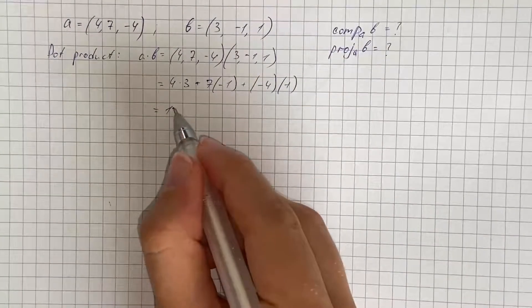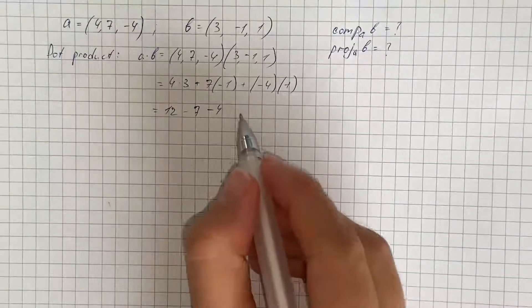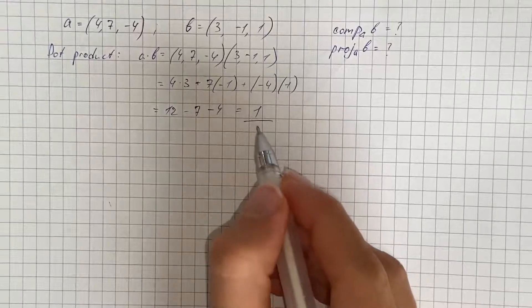That's going to be 12 minus 7 and minus 4. And we get 1. So that's our dot product.